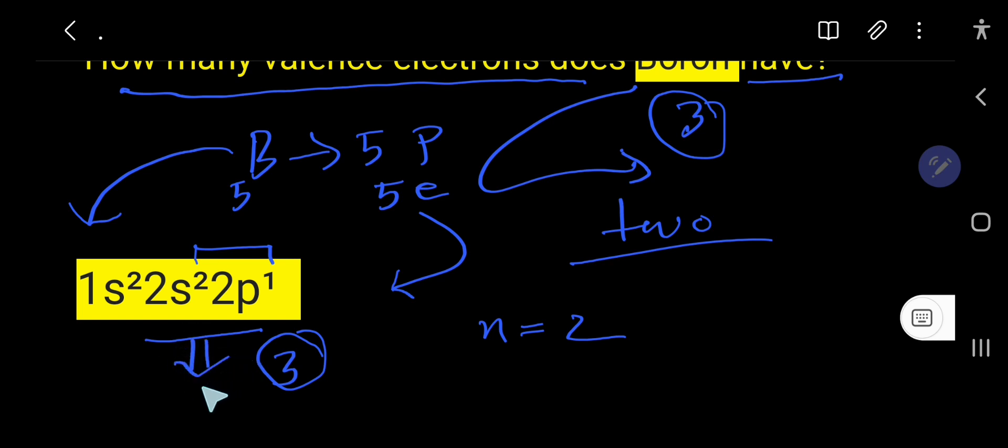And the electrons in valency shell are called valency electrons. Boron's reactivity depends on these valency electrons in the outermost shell.